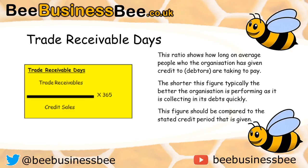The way to use this figure is to compare it to the standard credit terms given. For example, 30 days tends to be average, so you'd compare your result to 30 days. A really efficient business might be 28 or 29 days; a really poor business could be something like 140 days rather than 30. It all depends on the credit time you give customers.